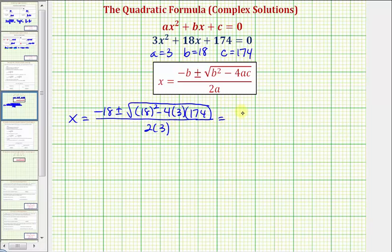Now let's begin to simplify. We'd have negative 18 plus or minus the square root of 18 squared minus four times 3 times 174.